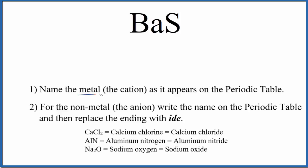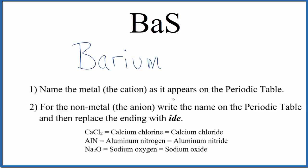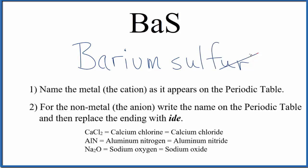First we write the name for the metal — that's the cation, the positive ion — as it appears on the periodic table. BA, that's barium. Then we'll write the name for the nonmetal, that's the anion, that's the sulfur, lowercase S, and we'll take this ending, this UR, and replace it with IDE.